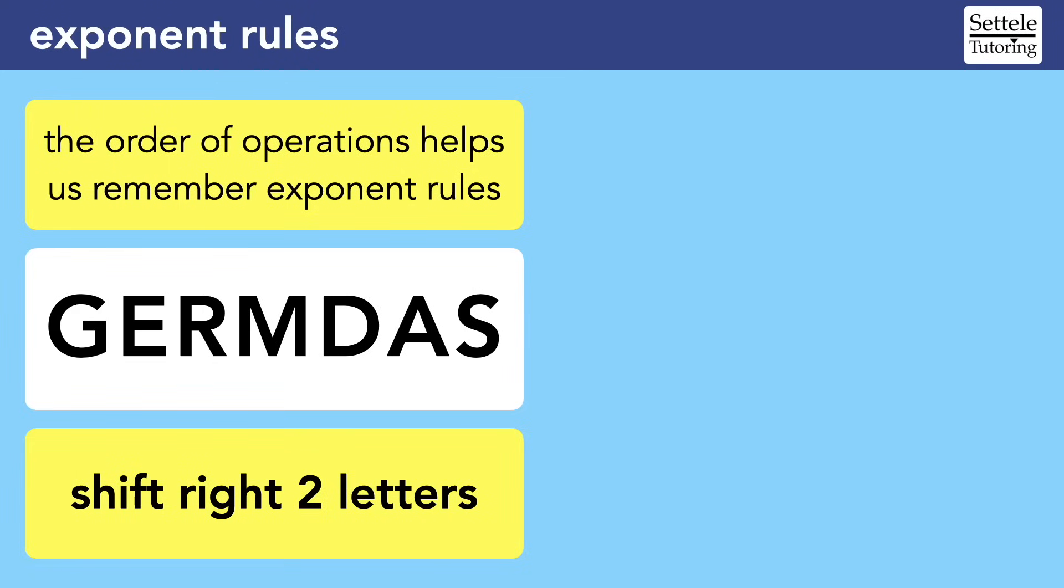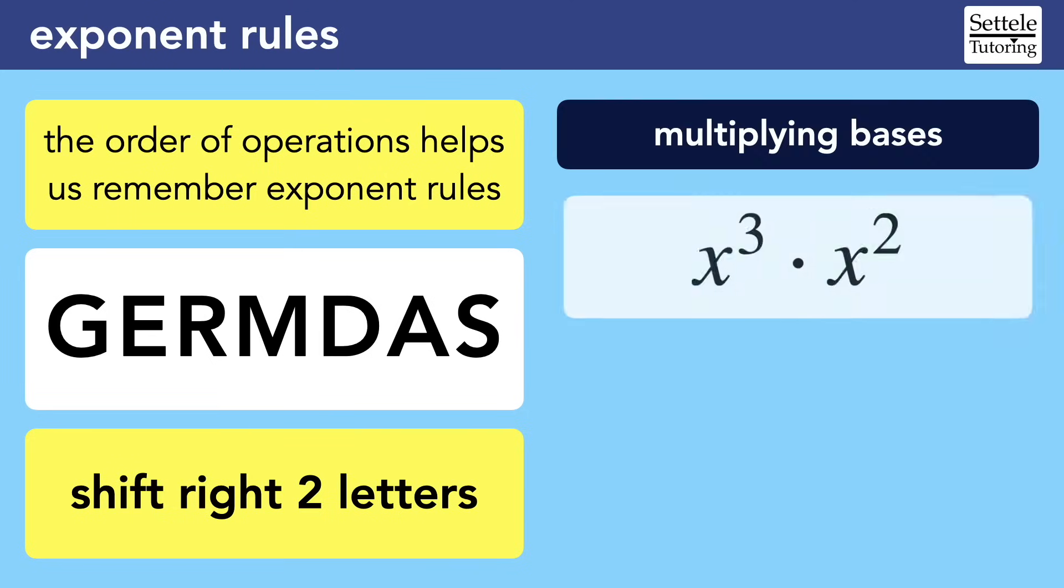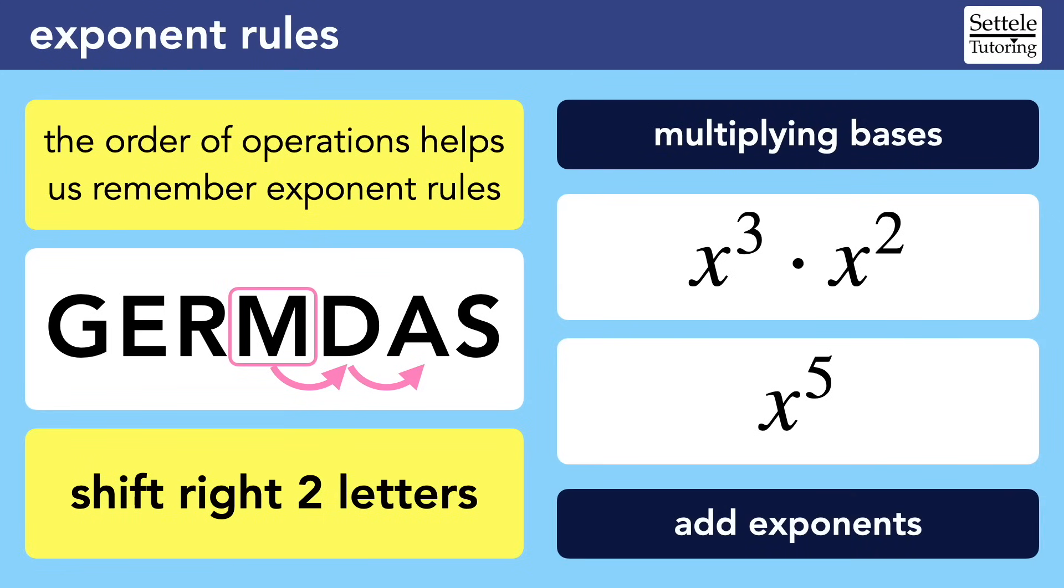Coincidentally, the order of GERMDAS also helps us remember the exponent rules themselves. When you have an operation involving two exponents, first identify the operation, then shift right two letters in GERMDAS. Let's start with an easy one. X to the third times X to the second is multiplication of the bases. That's the M in GERMDAS. Shifting right two letters brings us to addition. So when you multiply bases, we add the exponents. So X cubed times X squared is X to the fifth, because 3 plus 2 is 5.